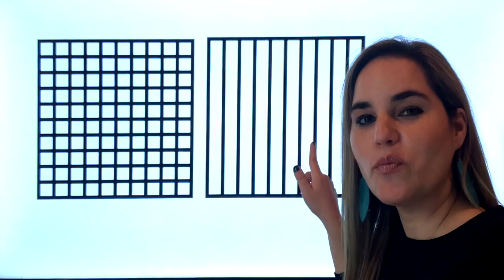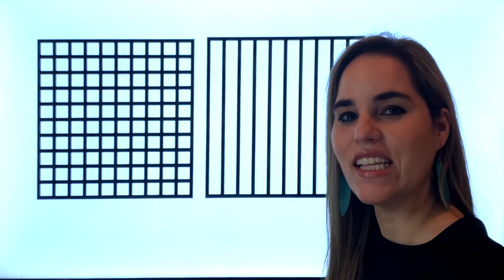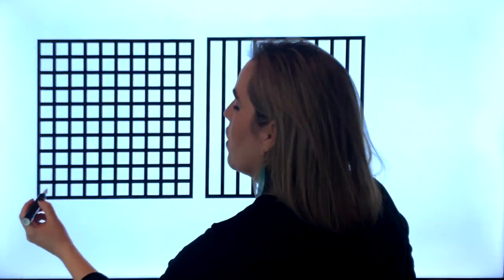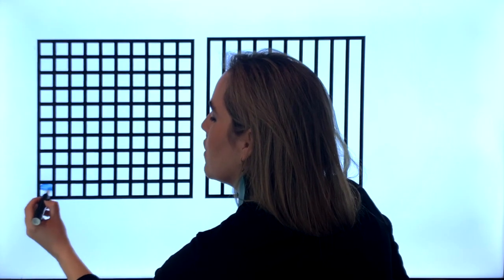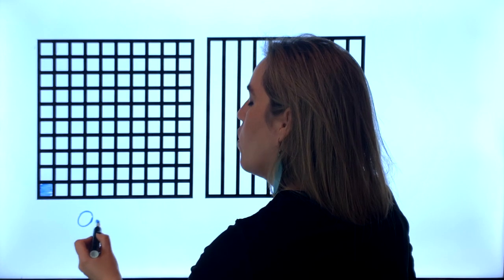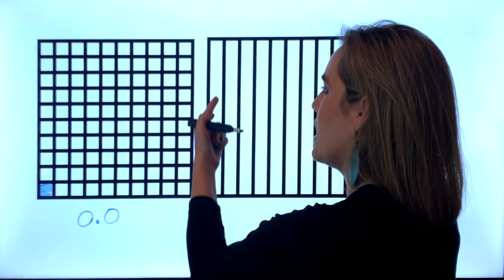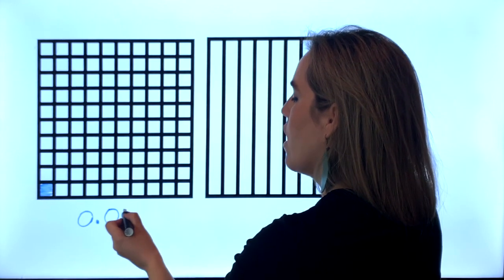So now let's write decimal numbers. If I color one of these, this will be zero because the whole is not complete. Zero tenths, one tenth is one of these, one hundredth. And one hundredth, each one of these is one hundredth.